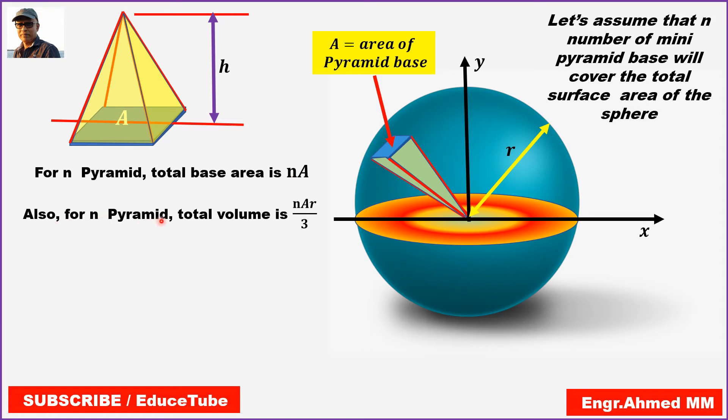Again for n pyramids, total volume, it will be—already we know the volume of mini pyramid, it was Ar divided by 3—so it will be multiplied by n.